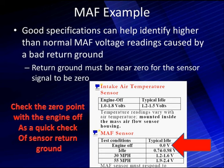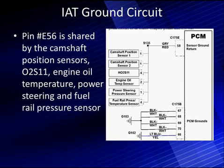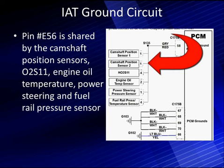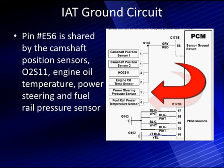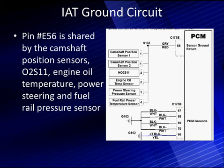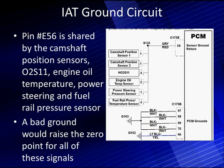We use a specification chart as a checkpoint with the engine off — it's a quick check of the ground return. Remember, the ground return from the mass airflow sensor is not the same as it is for the inlet air temperature just above it. Here's the inlet air temperature on pin 58, sharing its ground return with camshaft position sensor 1, camshaft position sensor 2, 0211, engine oil temperature sensor, power steering pressure sensor, and fuel rail pressure sensor. All of these would be wrong. If we had codes for these sensors saying their readings are too high, look for a bad ground. If the code said the readings were too low, we have a problem with the 5-volt supply. A bad ground would raise the zero point of all these signals and cause them all to be wrong at one time.